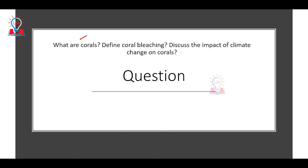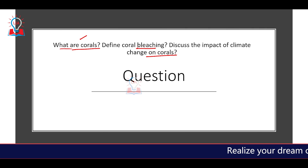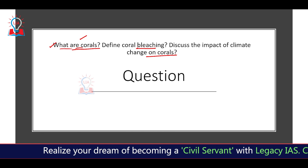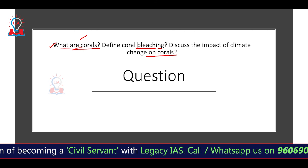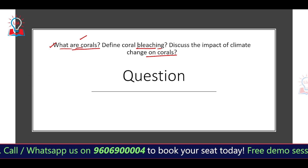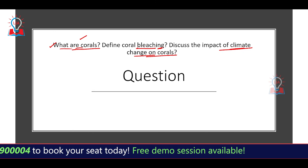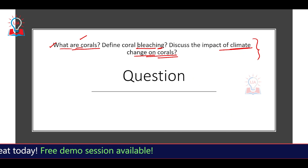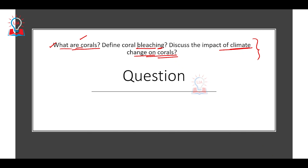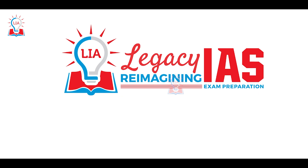The practice question for today is: What are corals? Define coral bleaching and discuss the impact of climate change on corals. Divide the question into parts: define corals and the symbiotic relationship between zooxanthellae and the coral polyp; define coral bleaching as when the symbiotic relationship breaks and corals turn white; then discuss how climate change and global warming are affecting corals, supported by data and examples. Thank you, and please subscribe to Legacy IAS Academy.